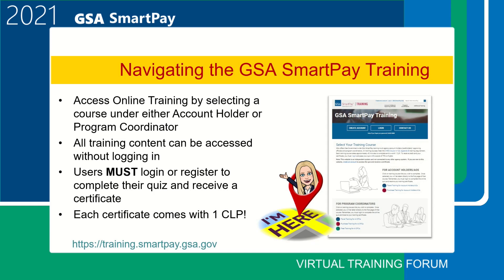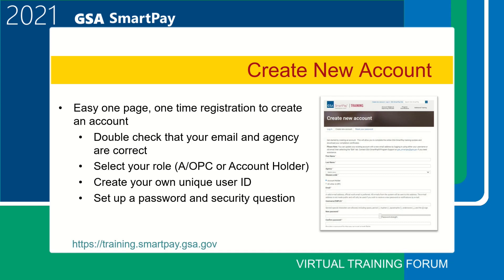If you wish to complete the online quiz and receive your training certificate, you will need to create a new account or log in if you already have one. Each training course will take approximately 45 minutes to complete and is worth one CLP. If you are a first-time user, you will need to create a new account by completing the one-page, one-time registration. When creating a new account, double-check that your email and agency are correct. Select your role — either AOPC or account holder — then create your own unique user ID. Set up a password and save your information by clicking the Create New Account button.